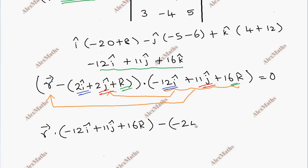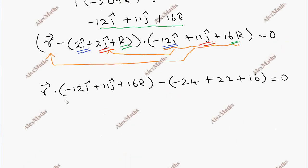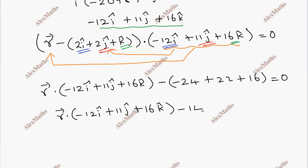Expanding the dot product: minus 24 plus 22 plus 16 equals 14. Simplifying gives minus 14, equal to 0, so the constant becomes 14.